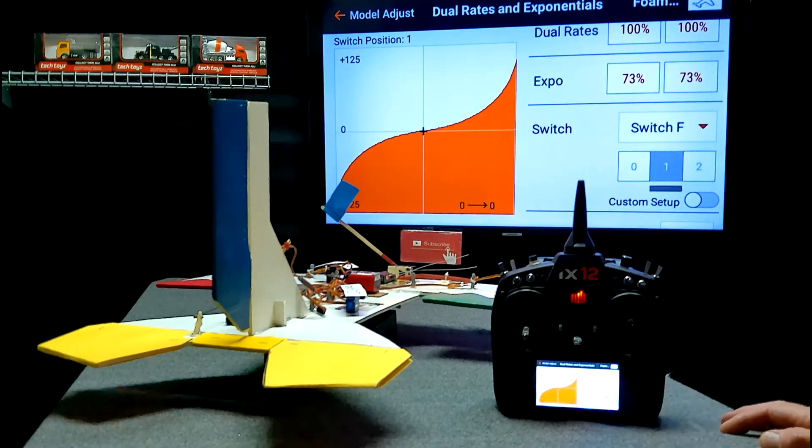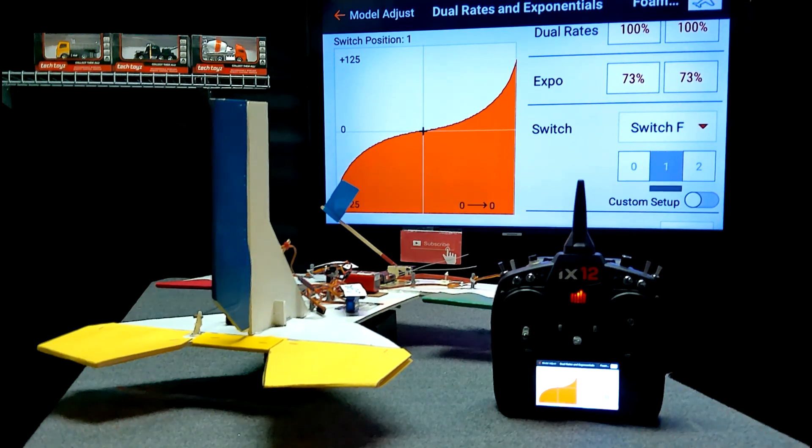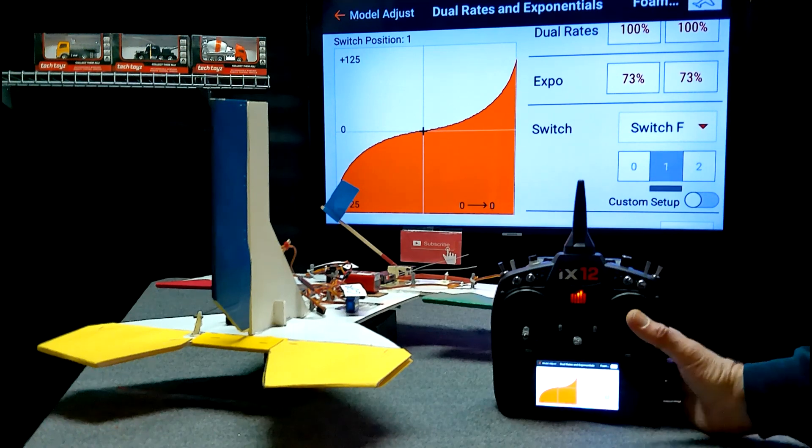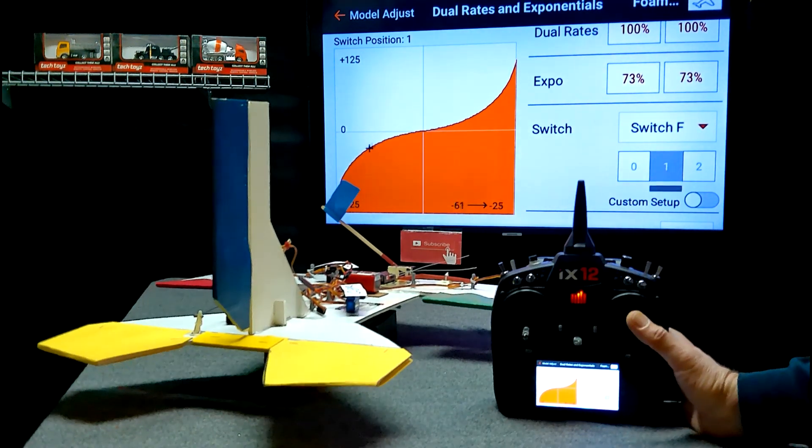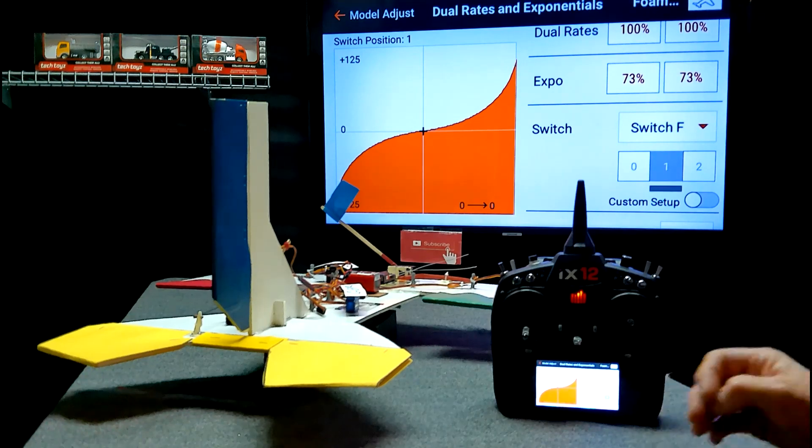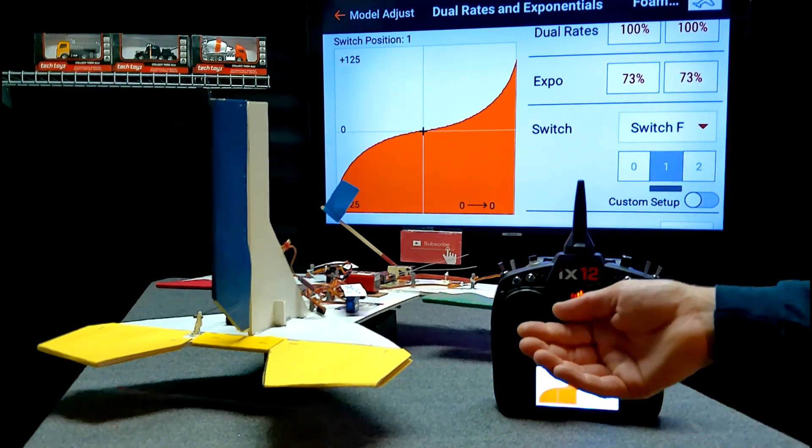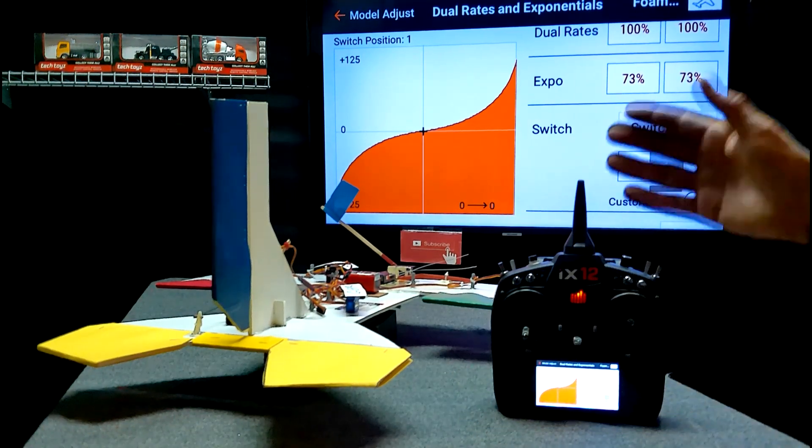Now our setting with the 73% Expo, just for demonstration purposes only, watch my thumb compared to the elevator now. So my thumb moved quite a bit and the elevator just barely moved. And then it kind of caught up.